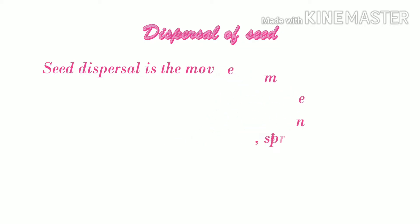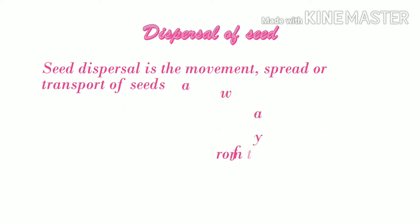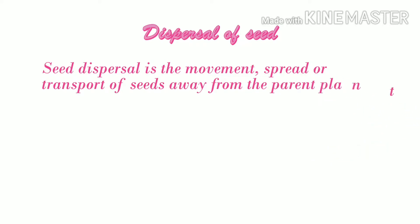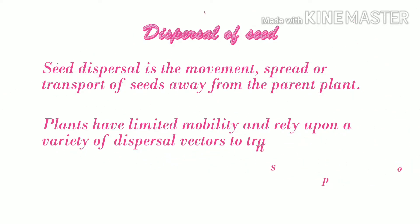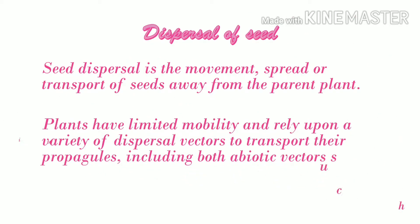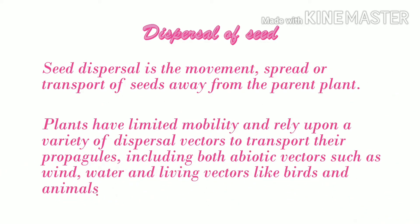Dispersal of seed. Seed dispersal is the movement, spread, or transport of seeds away from the parent plant. Plants have limited mobility and rely upon a variety of dispersal vectors to transport their propagules, including both abiotic vectors such as wind and water, and living vectors like birds and animals. There are five main modes of seed dispersal.